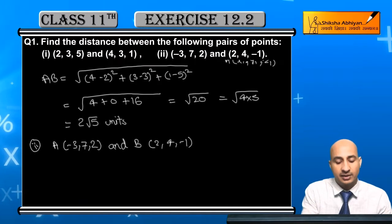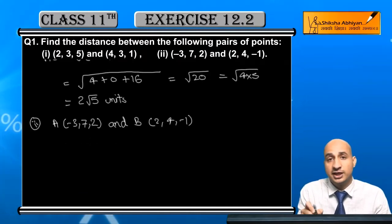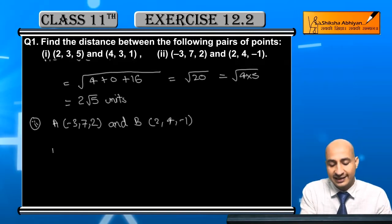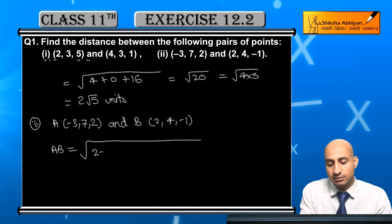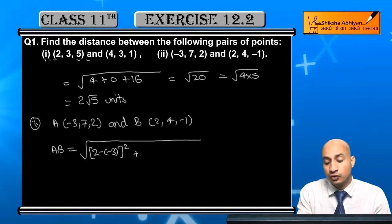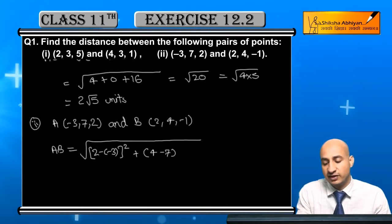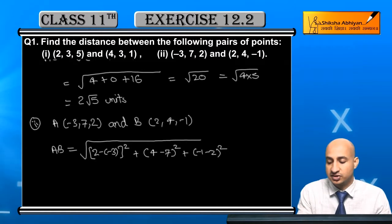Now, again, simply, you apply here. I will give B coordinate x2, y2, and z2, and A coordinate x1, y1, and z1. So, again, I will give directly here, AB value distance formula. This distance formula, again, here, 2, minus, minus 3, square, plus 4, minus 7, y2, minus y1 square, plus minus 1, minus 2 square. Yes, it's true.